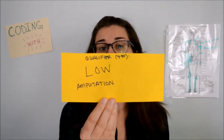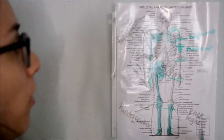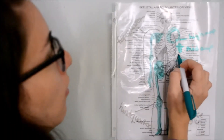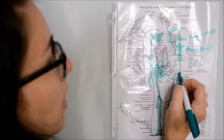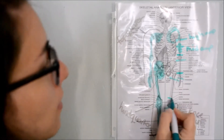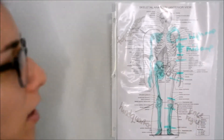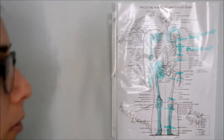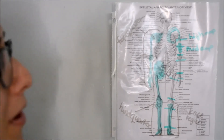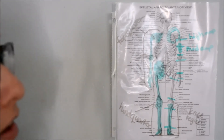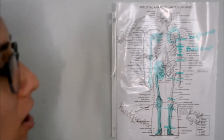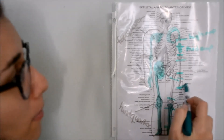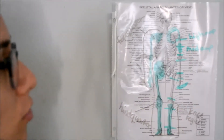The next term that you will see in your qualifier or seventh character placement is a low amputation. This is where we are talking about the distal end of the humerus, the ulna and radius, the femur, tibia and fibula, and also any of the hand or foot bones — essentially the end of any of these bones that are as far away as possible from the joint closest to the trunk.